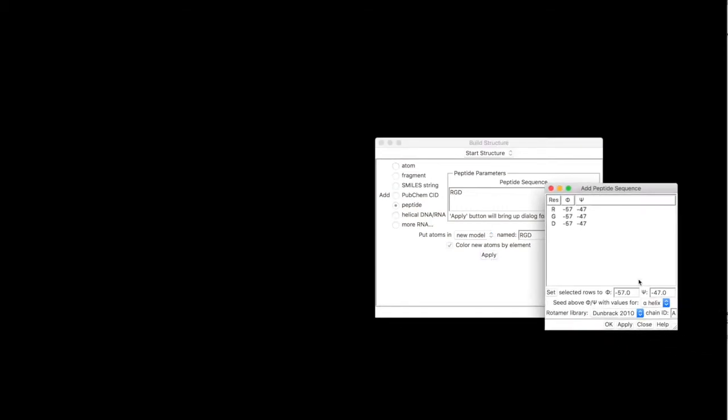The dialog appears, let's build a peptide that is stretched, let's choose the anti-parallel beta strand for the phi psi angles, let's select all the residues, click set.